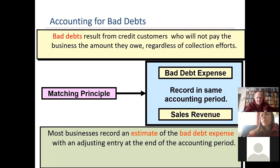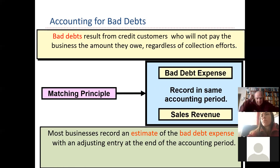We're going to go over bad debts expense right now. A student mentions this happens in their business a lot — their CPA has never told them what to do with uncollectible accounts, so they've been sitting in accounts receivable. They're considered an asset, but they'll never be collected. The student created an account for it but isn't sure it was done correctly.